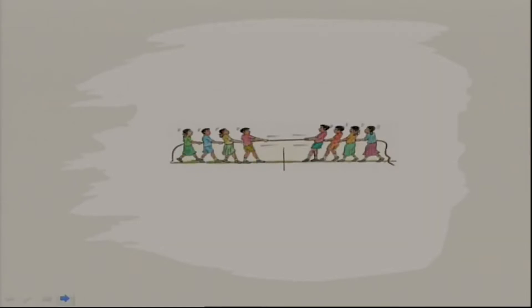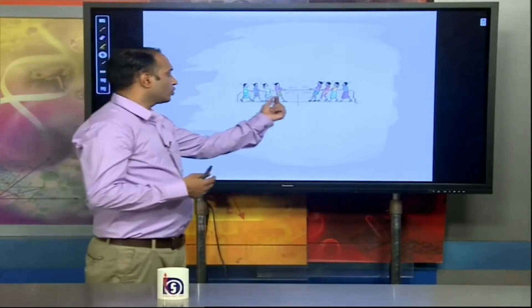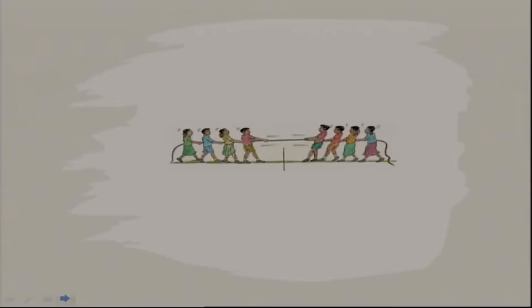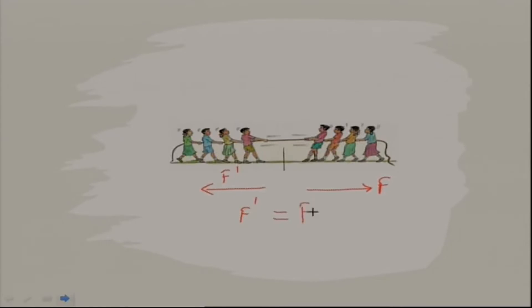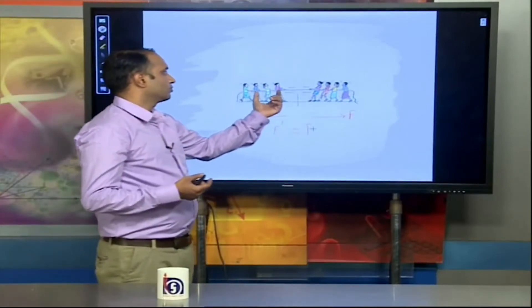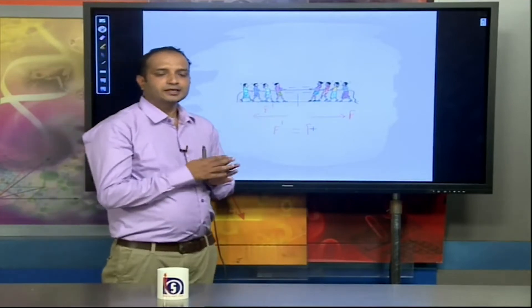A tug of war example: a rope is stretched by two teams. The left-hand side team applies force to the right, and the right-hand side team applies force to the left — both teams apply force F in opposite directions. When the left force F equals the right force F, it is known as balanced force, and all students remain in equilibrium position.